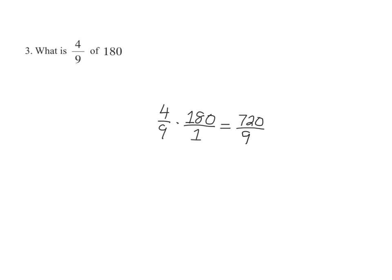Now we can reduce 720 over 9 by finding a common factor between 720 and 9 and that common factor is 9 since 80 times 9 gives us 720 and 1 times 9 is equal to 9.